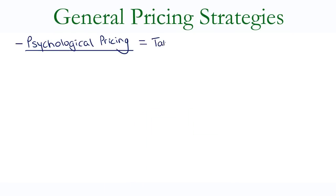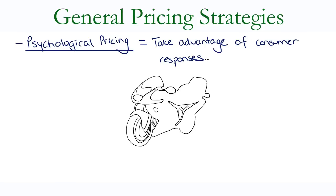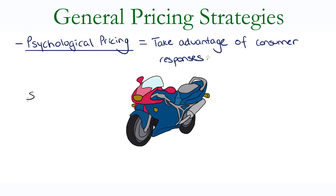Fourthly, psychological pricing, which is used to take advantage of the consumer's response. For example, if I'm selling my motorbike to generate some cash so I can go traveling, I know I need to sell the bike for around $6,000. But if I price it at $5,999, I can get that psychological edge on the consumer because it appears cheaper, when really I'm charging an almost identical price.